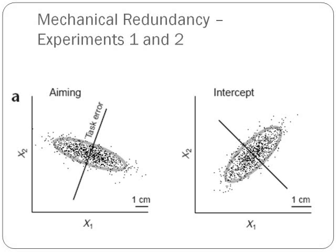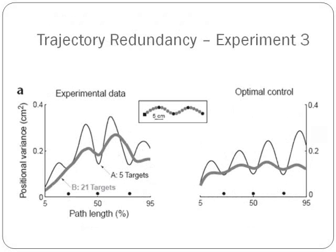The next experiment was done on trajectory redundancy, where subjects were expected to make a planar arm movement through a sequence of targets, either 5 or 21. This experiment showed that increasing the number of targets also increased the time required for the trajectory to take place. The increased time showed that the variance between the trajectories was decreased, as seen in the optimal control graph. This data suggests that increasing the time for a trajectory to occur increases the accuracy of the trajectory.